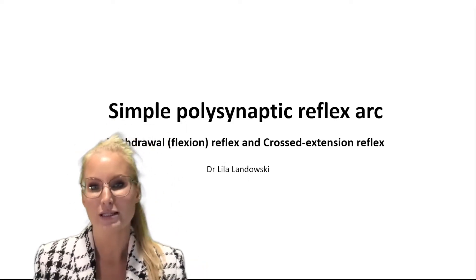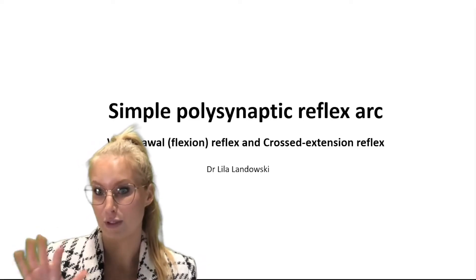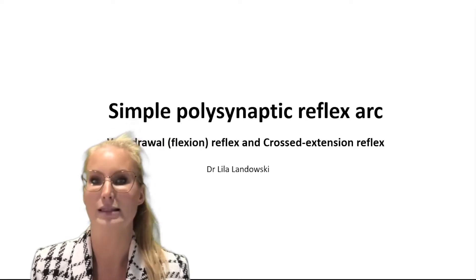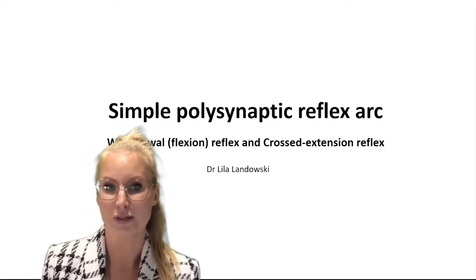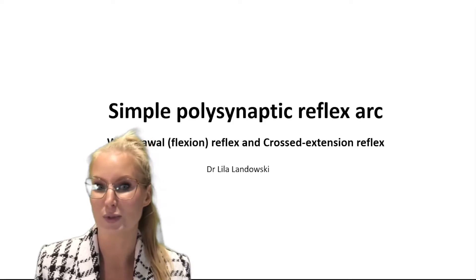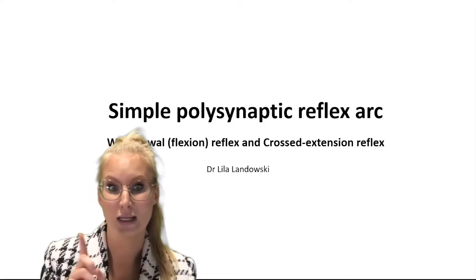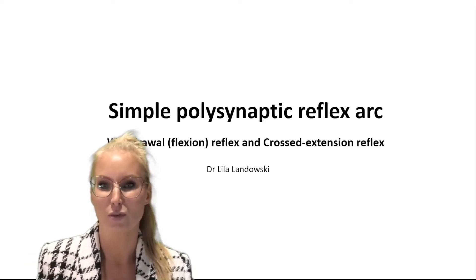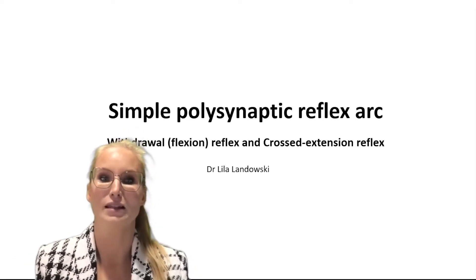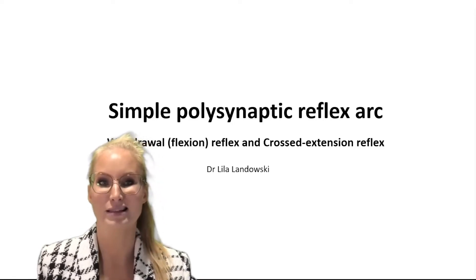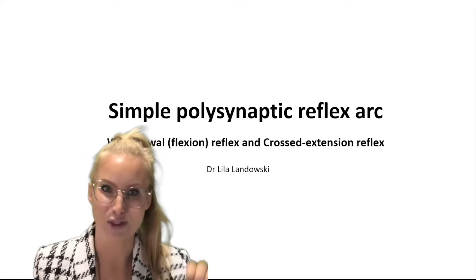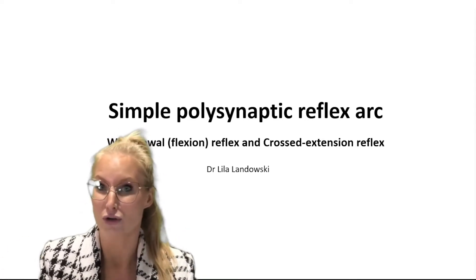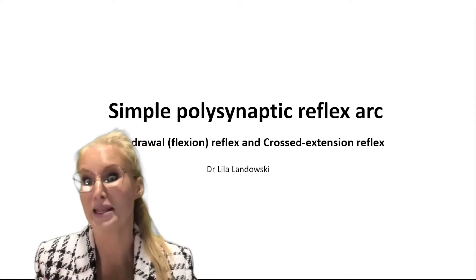A polysynaptic reflex has five components, and the only thing simpler than a polysynaptic reflex is a monosynaptic reflex, which only has four components. We call it monosynaptic because 'mono' means one — it has one synapse between the sensory neuron and the motor neuron. 'Poly' means many, so a polysynaptic reflex has many synapses, usually with one or more interneurons between the sensory and motor neuron.